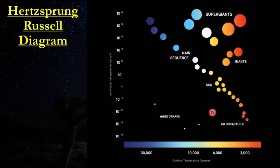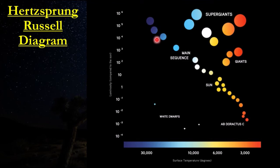One benefit of our Sun having a lower temperature is that it will live longer. Our Sun has a lifespan of about 10 billion years, while the stars on the blue end live about 1 billion years. Another interesting fact is our Sun has already gone through half of its life cycle — it's about 5 billion years old.